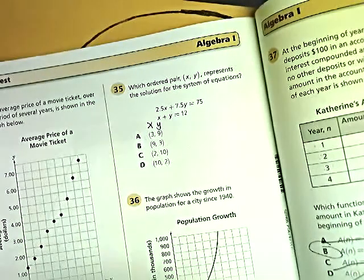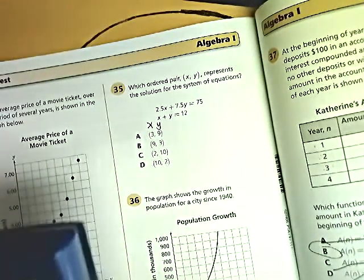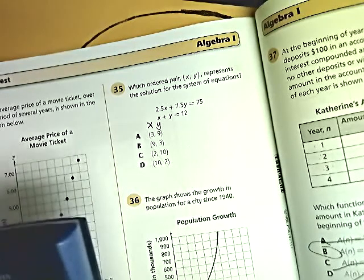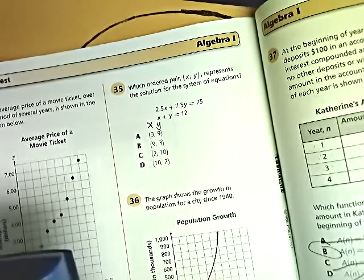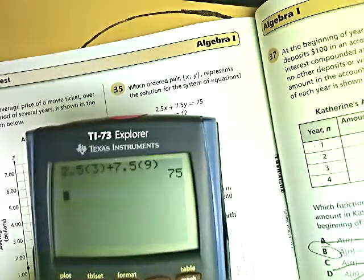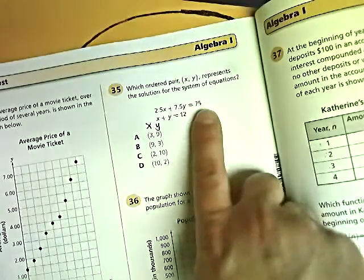That way they're easy to plug in. So for the first one, wherever x was, I'm going to plug in a 3, and wherever y was, I'm going to plug in a 9, just like this. I'm going to hit enter. It gives me 75, and that's exactly what it's supposed to give me.